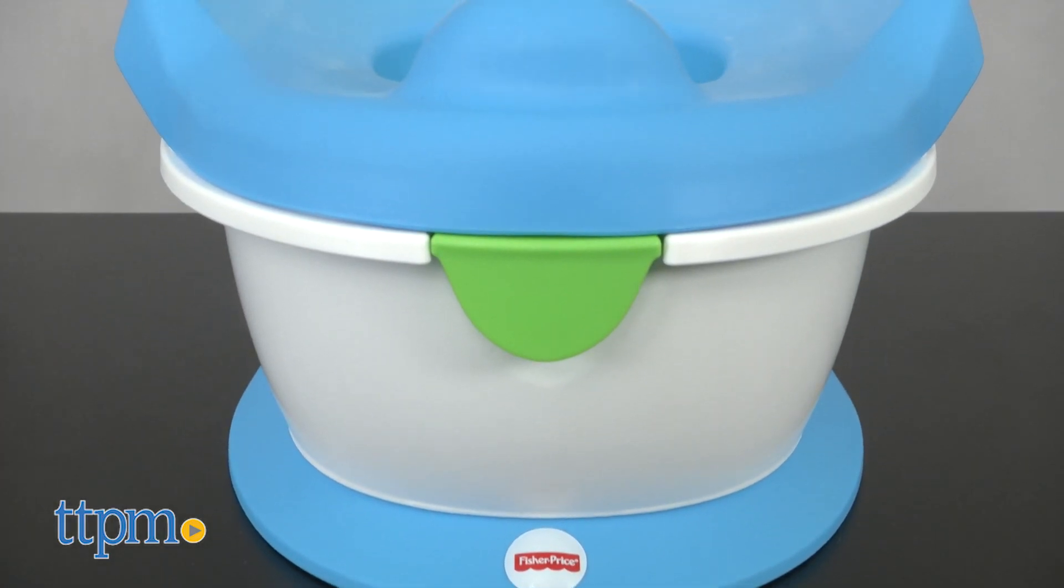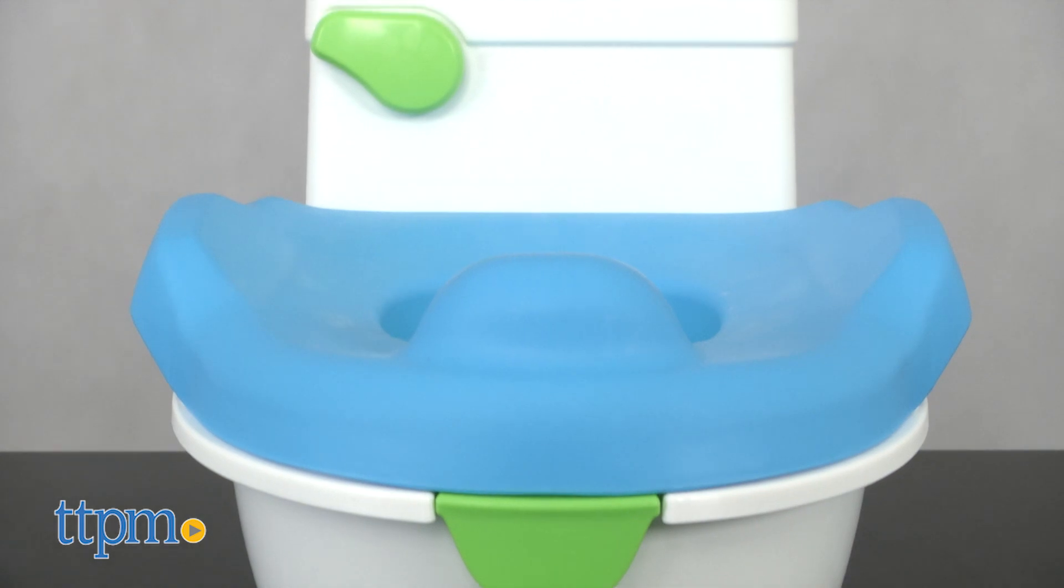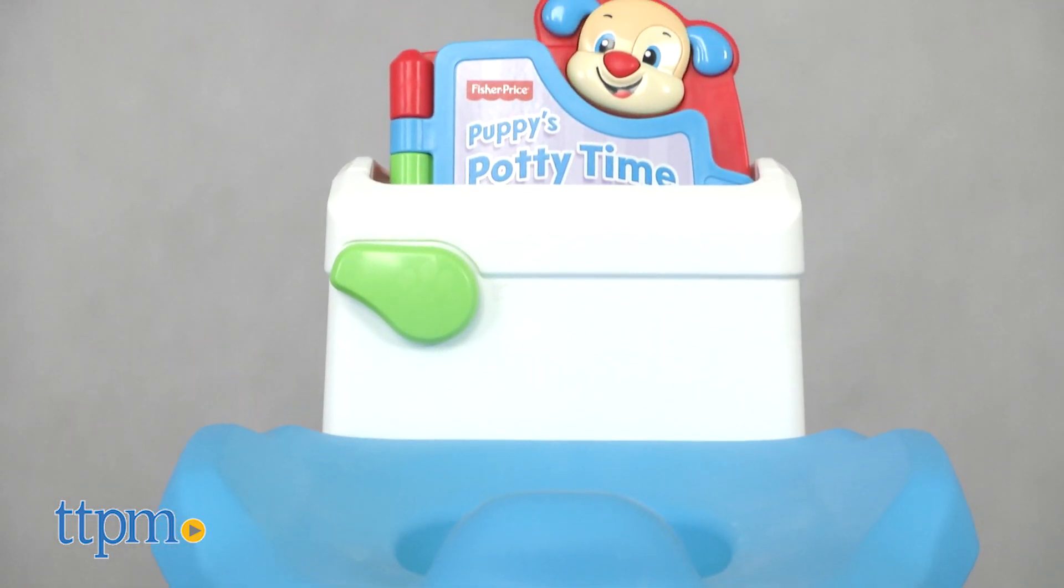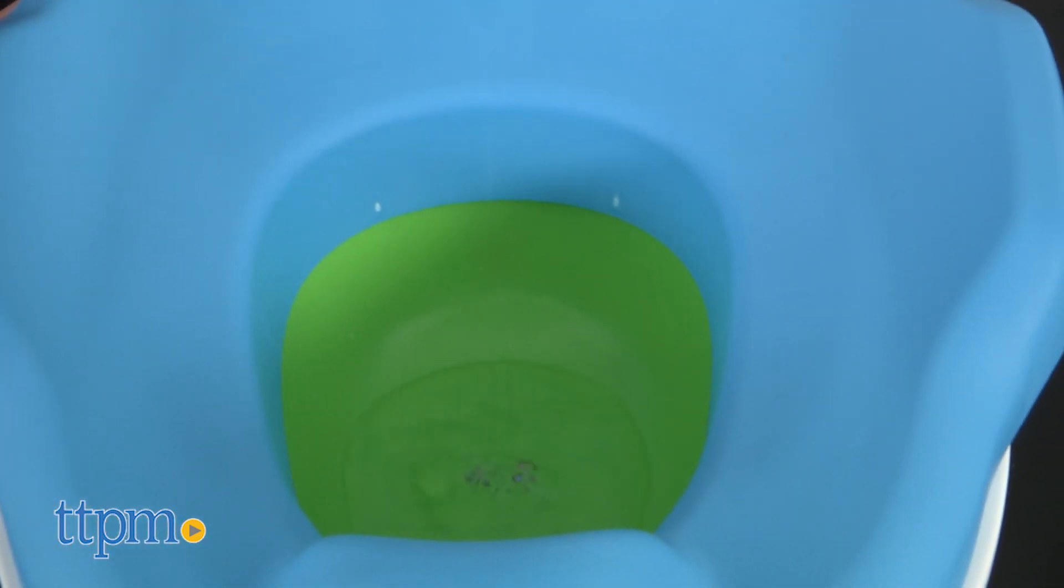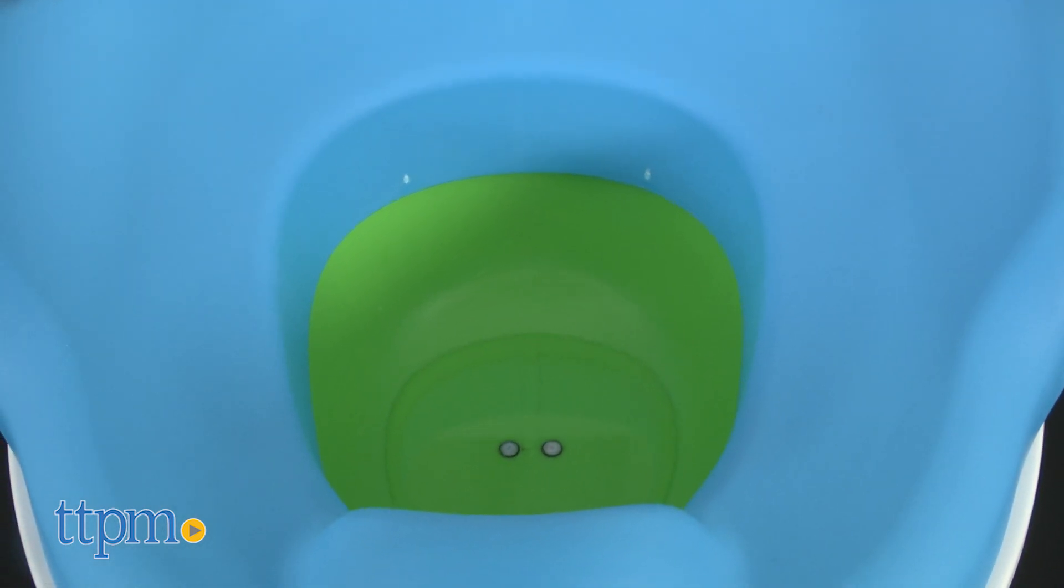This is a potty training potty that features the Laugh and Learn puppy character, along with more than 40 songs, sounds, tunes, and phrases to encourage toddlers on their potty training journey. Woohoo! You did it! You went potty on the potty. Way to go on the potty.